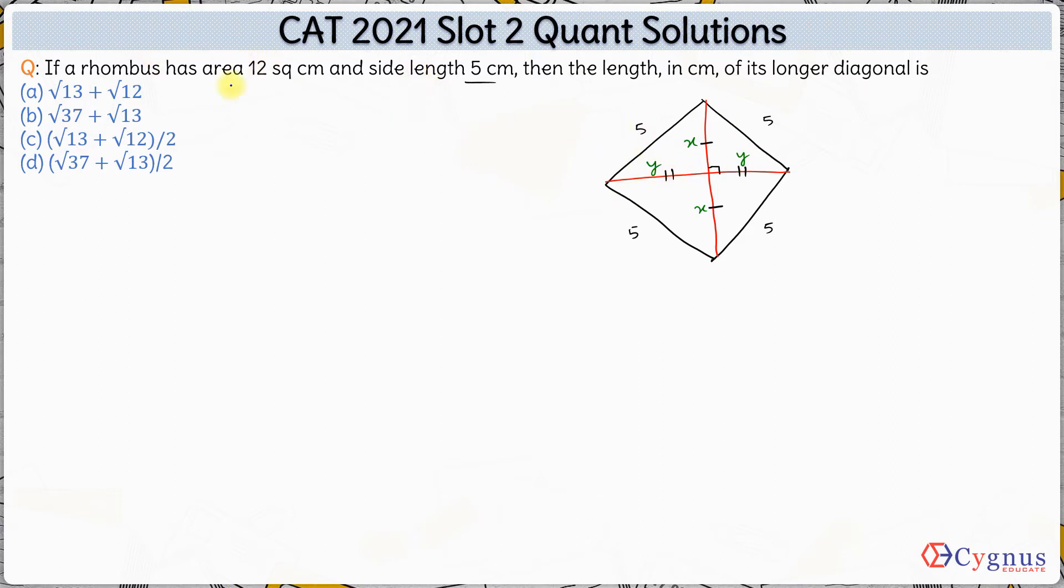So area of the rhombus is given to us which is 12 square centimeter. Now area of a rhombus is half of the product of the two diagonals which is 2x into 2y which is equal to 12 given to us. So 2 and 2 get cancelled out. We have twice of x into y is equal to 12. This is the first thing.